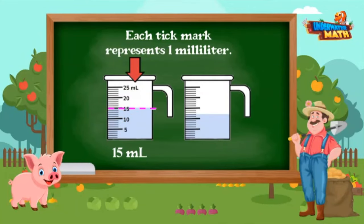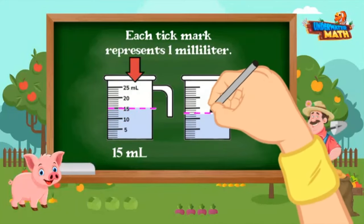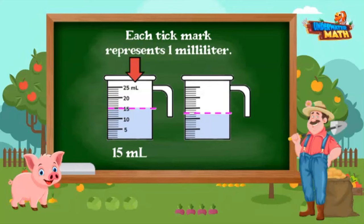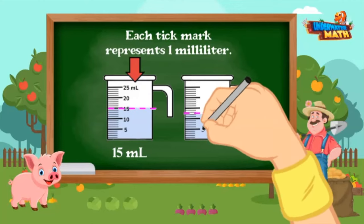Although the second container doesn't have the tick marks numbered, the scale is still the same. Each tick mark also represents one milliliter. Let's count by fives and ones to find the amount of water in it: five, ten, eleven, twelve. The second container has 12 milliliters in it. Now for the measuring cup, there are two containers again.